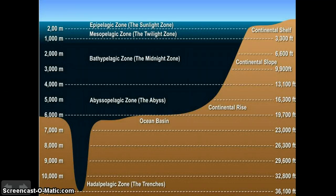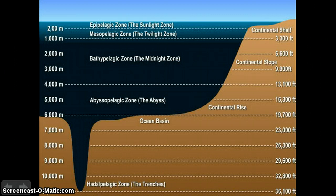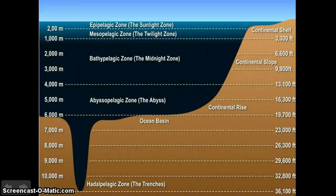The pelagic zone is then divided into three subzones. The sunlight zone, 0 to 200 meters, where sunlight enters allowing photosynthesis in plants. The twilight zone, 200 to 1,000 meters, where the light is dim so plants cannot grow. And the midnight zone, 1,000 to 4,000 meters, where light cannot reach at all.